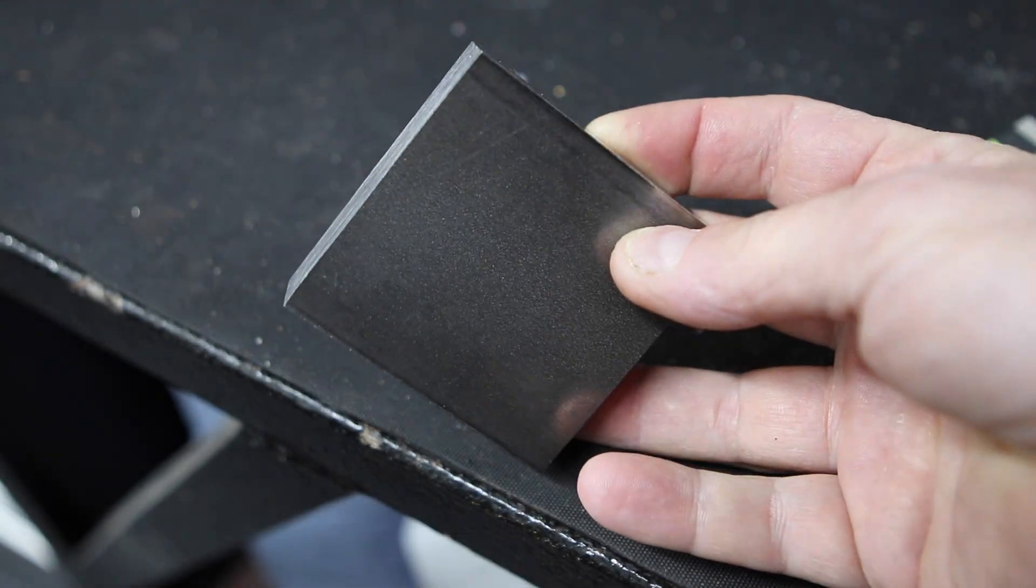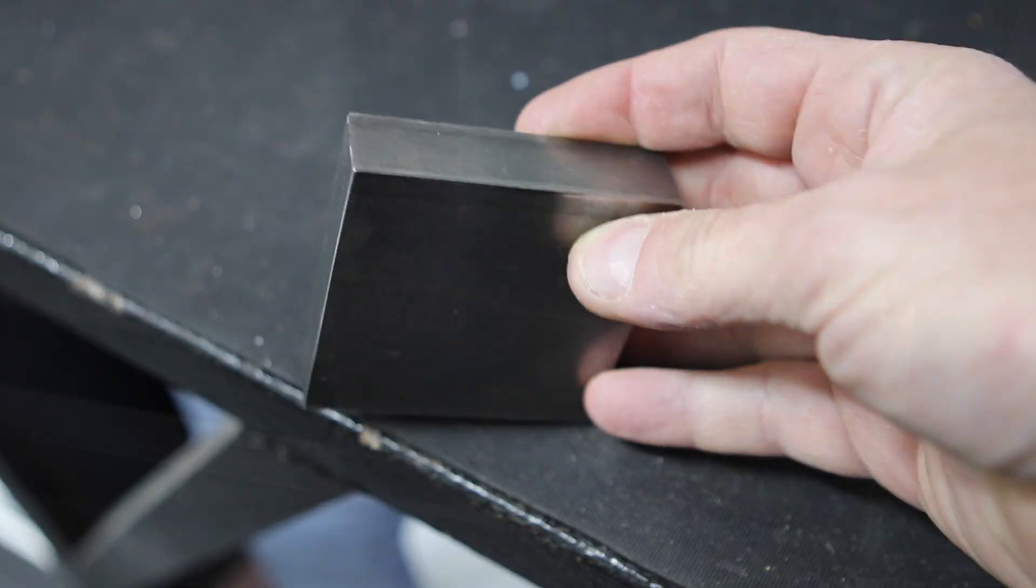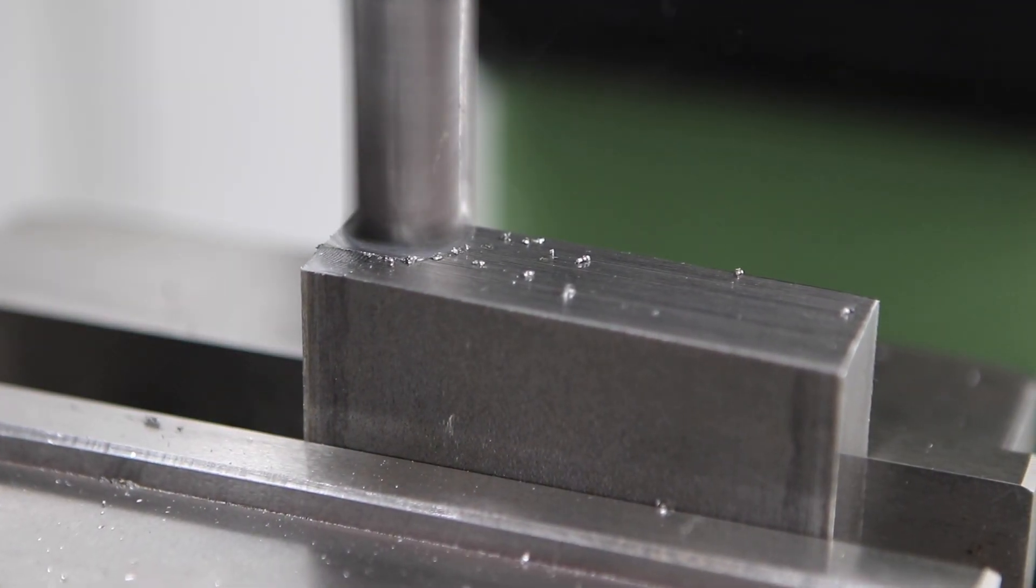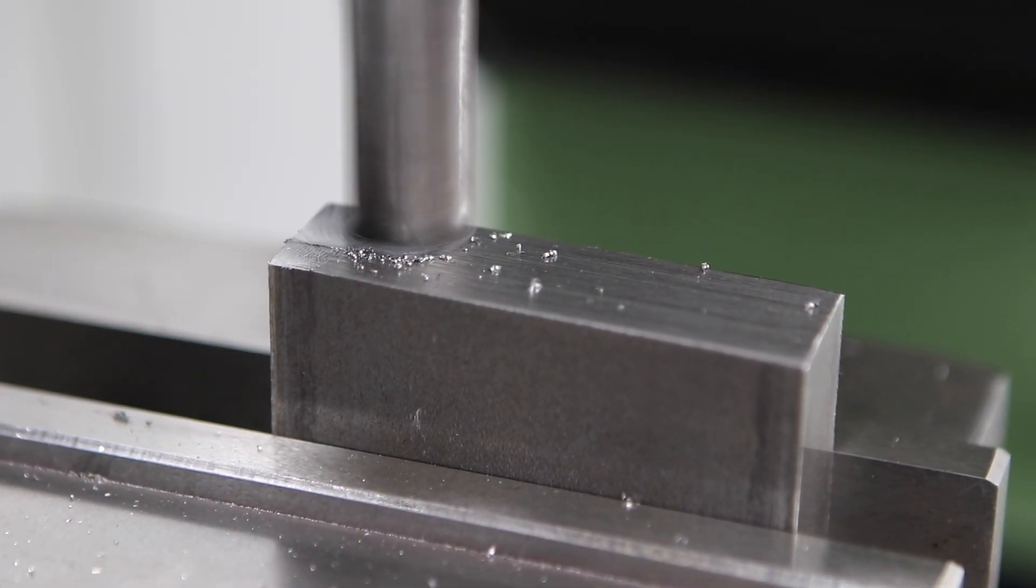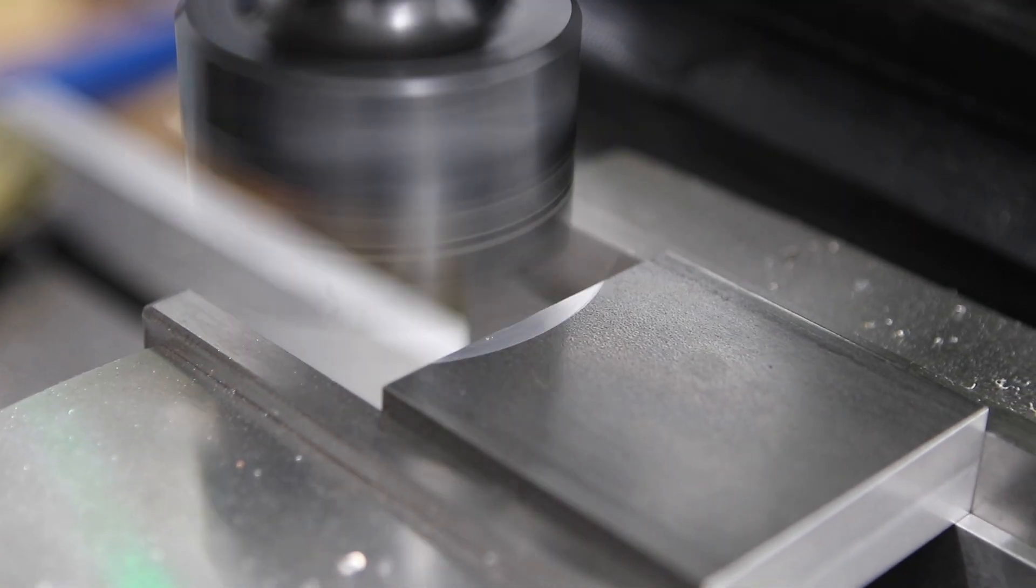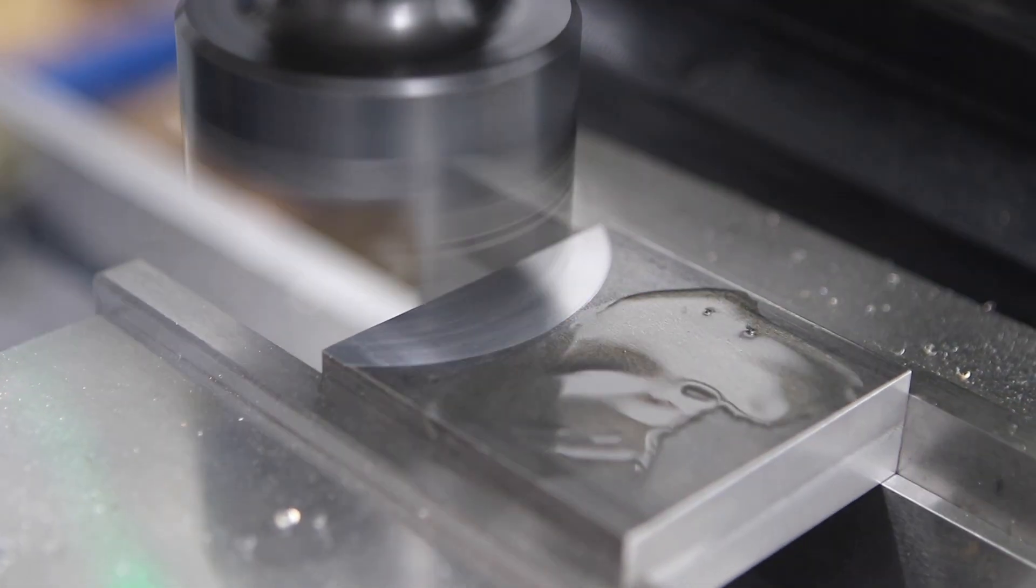We're going to start off by making the base and we're going to use this piece of mild steel that came with the kit. The stock is rough sawn on the end so I'm going to clean that up with a four flute carbide end mill and after that I'm going to square up the rest of the stock with a fly cutter.